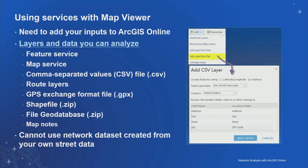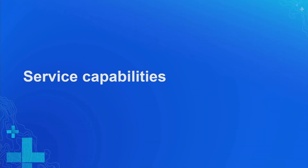These services use Esri's own street data. If you want to use your own street data, that's not possible in ArcGIS Online. However, you can use ArcGIS Enterprise with your own street data, publish all of these services yourself, and then use the same apps — Map Viewer, ArcGIS Pro, and ArcMap — against services running on your own street data. The exact same functionality is also available as part of ArcGIS Enterprise.